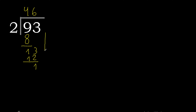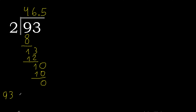There is no number that goes down, therefore complete — always complete with 0. And here with a point. 2 multiplied by 5 is 10. 10 is the closest. 10 minus 10 is 0, therefore finish. Therefore 93 divided by 2 is 46.5.